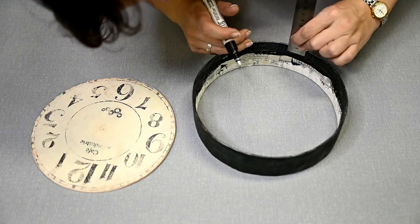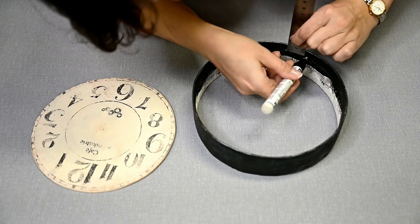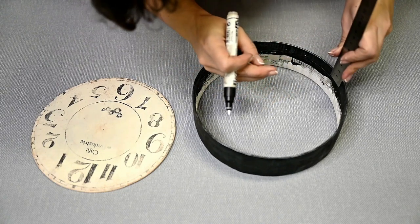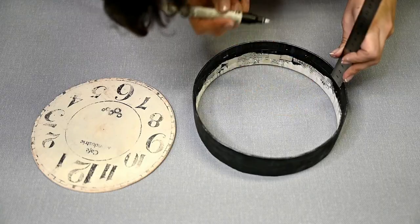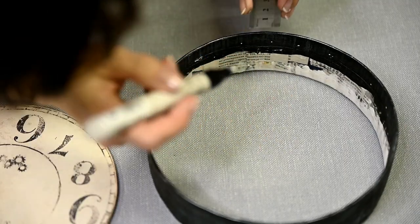To attach the dial to the ring, I'm putting measuring tape on the inside of the ring and making notes around the entire circumference in order to align the dial.